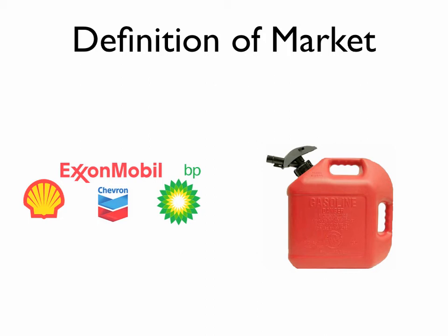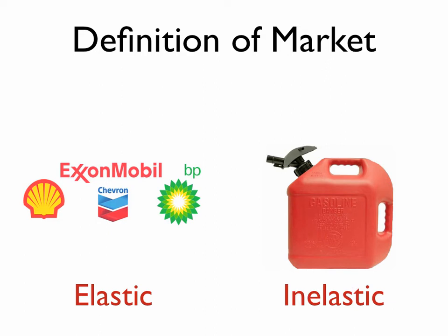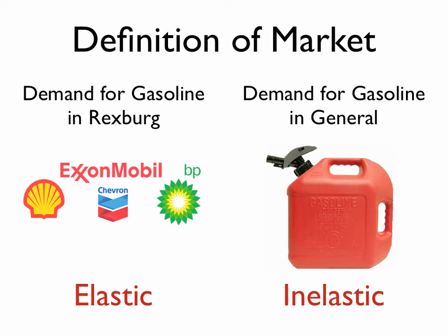The fourth item is the definition of the market. In Rexburg, with five different sources for gasoline, demand is fairly elastic. In contrast, demand for gasoline in general is fairly inelastic. So a small, defined market tends to be elastic, while a large, broadly defined market tends to be inelastic.